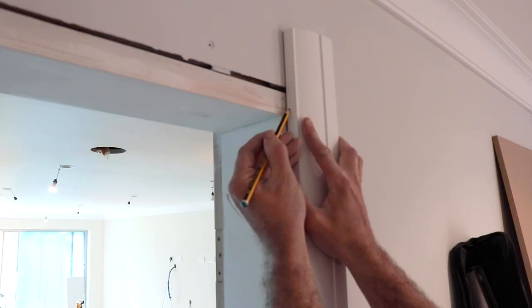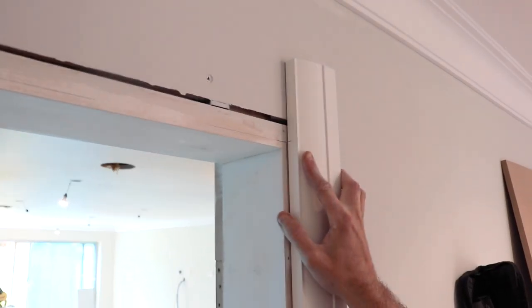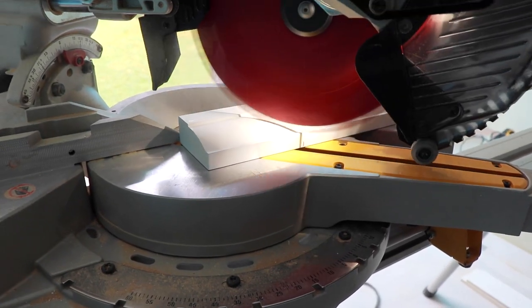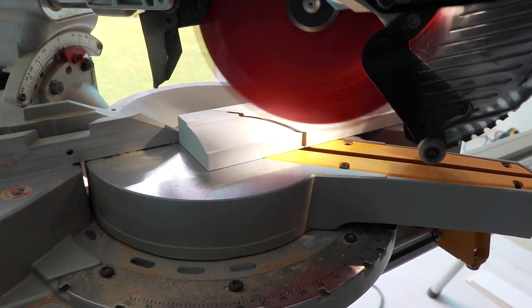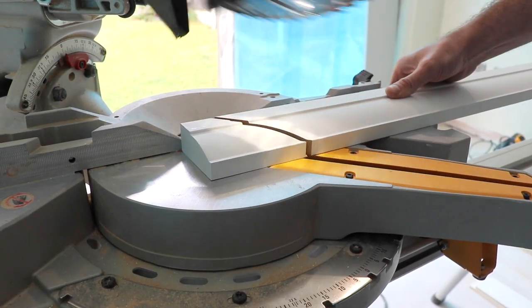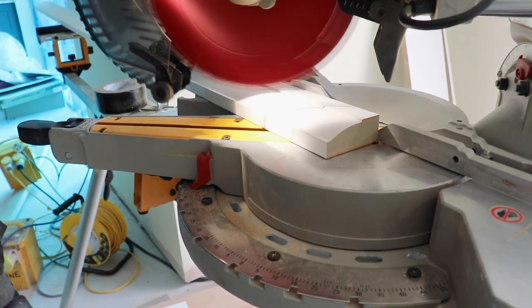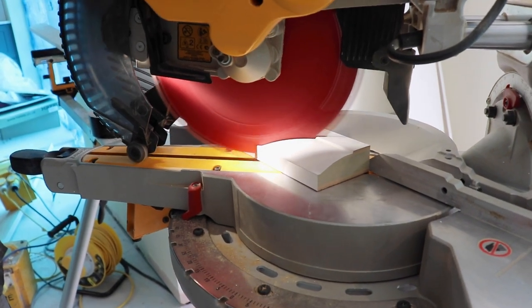Once you've got your markings we can mitre out our architrave. To mitre the right upright set your saw 45 degrees to the right making sure the profile side of the architrave is closer to you and to mitre the left upright set your saw 45 degrees to the left again with the profile side of the architrave closer to you.